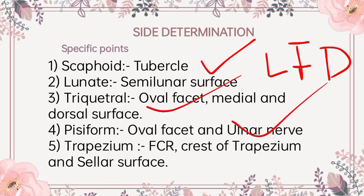Trapezium: the palmar surface has a vertical groove for the tendon of flexor carpi radialis. The groove is limited laterally by the crest of the trapezium. The distal surface bears a saddle — concavo-convex — articular surface for the base of the first metacarpal bone.